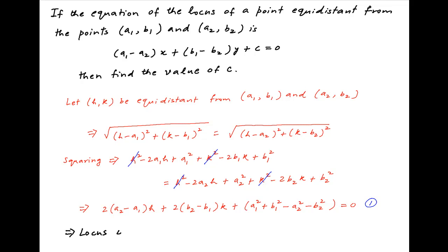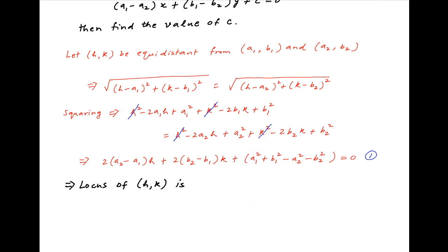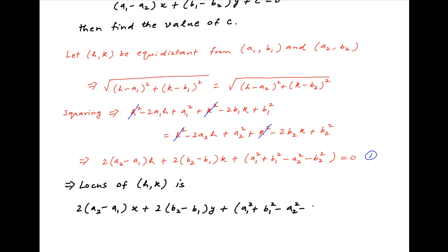Therefore, the equation of the locus of a point equidistant from the given points can be obtained by replacing h with x and k with y, which gives: 2 times (a2 minus a1) times x, plus 2 times (b2 minus b1) times y, plus a1 squared plus b1 squared minus a2 squared minus b2 squared, equals 0.